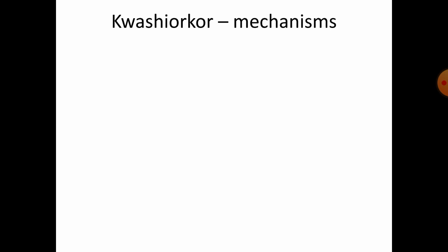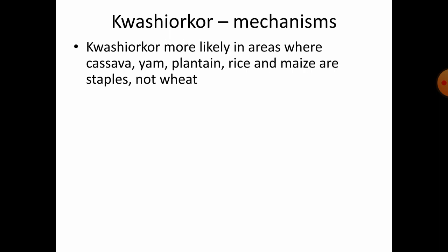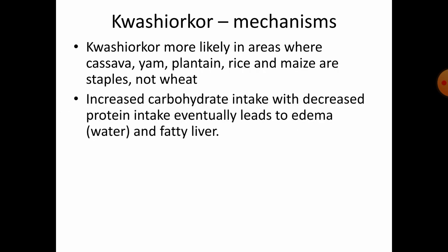Kwashiorkor is more likely in areas where cassava, yam plantations, rice, or maize are the staple diet rather than wheat. There is increased carbohydrate intake with decreased protein intake, eventually leading to edema and fatty liver. In their diet, carbohydrates are more and proteins are less, and this decreased protein intake leads to edema.